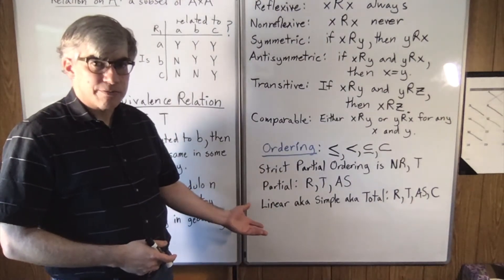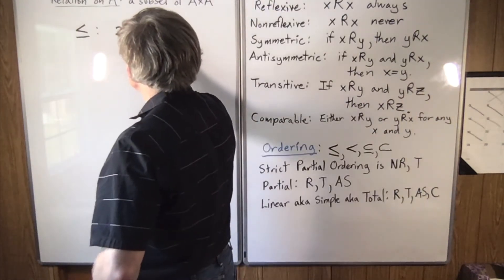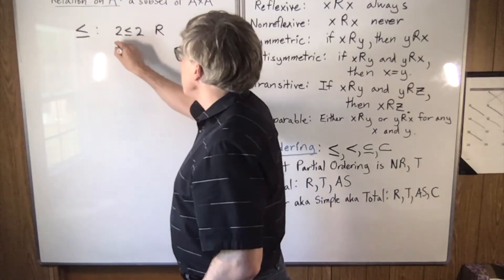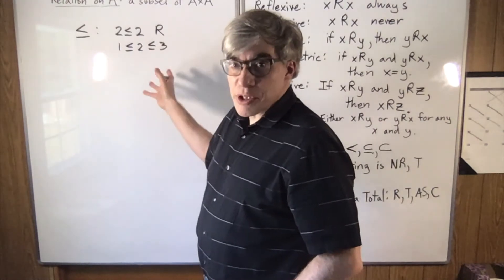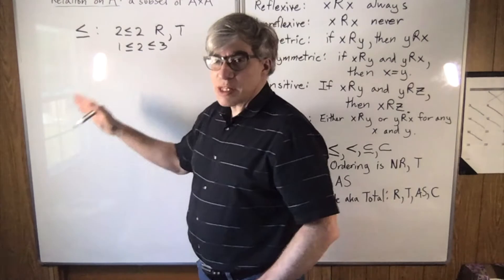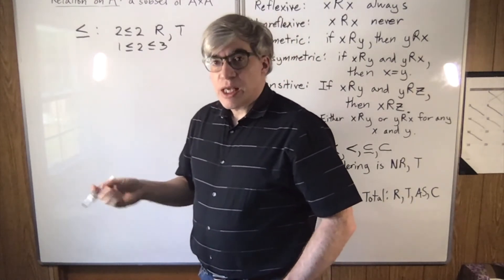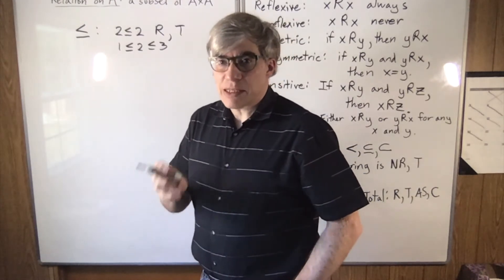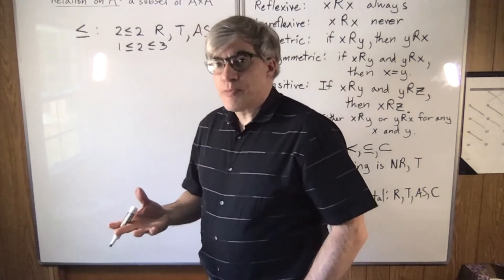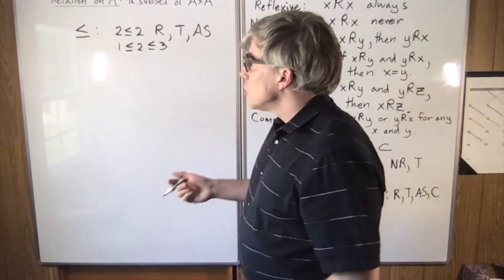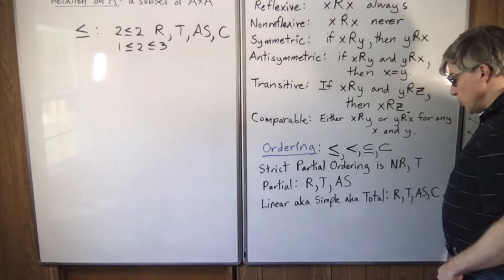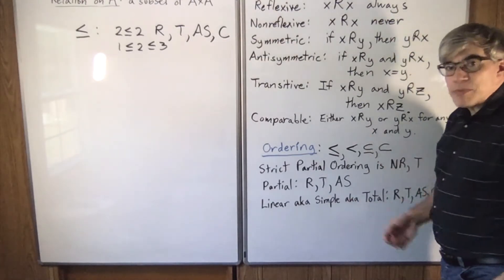So which relations have which properties? Less than or equal: two is less than or equal to two, so everything is always less than or equal to itself — it is reflexive. If one is less than or equal to two and two is less than or equal to three, then one is less than or equal to three — it's transitive. Is it symmetric? If one is less than two, is two less than one? No. Antisymmetric: if a ≤ b and b ≤ a, then a equals b — yes, antisymmetric. Is it comparable? On the number line, yes, you can compare any two numbers. So less than or equal is reflexive, transitive, antisymmetric, and comparable — it is a total ordering. You have put the numbers in order.